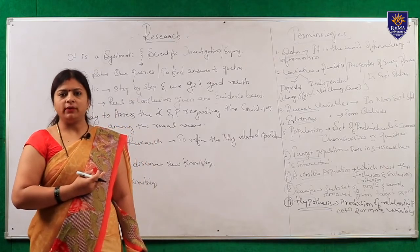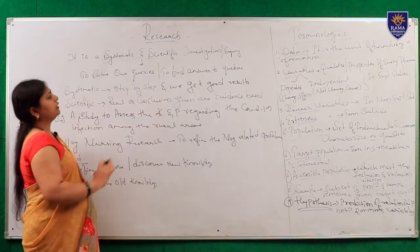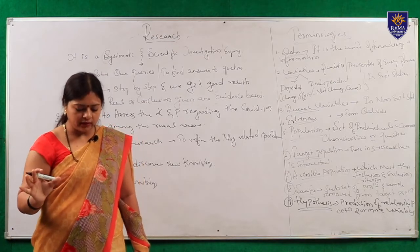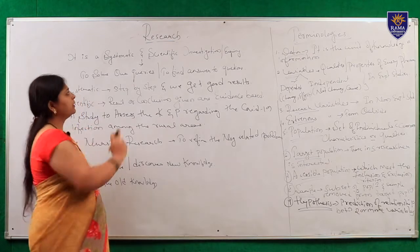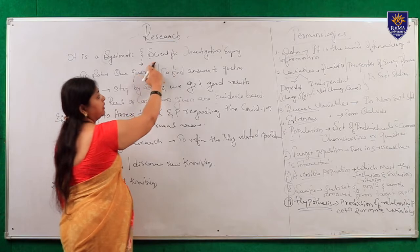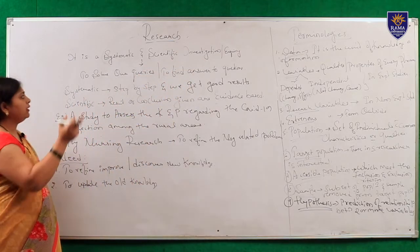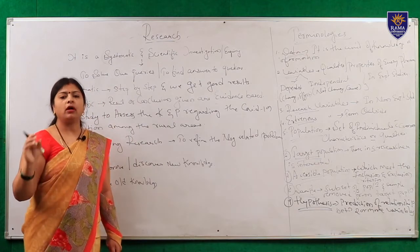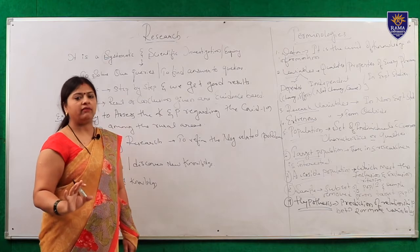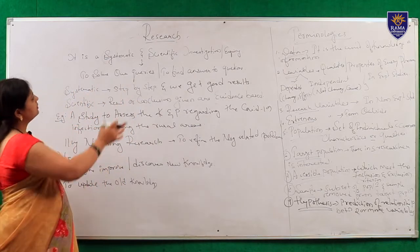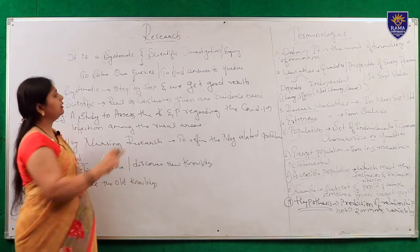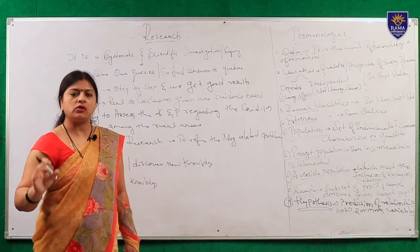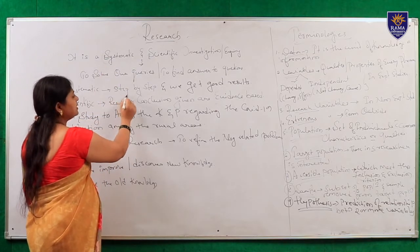Let us start with today's topic - research. What do you mean by research? Research is nothing but a systematic and scientific investigation or enquiry. We are doing it to solve our queries and to find out answers to our particular research-related questions. In this definition I use two words: systematic and scientific. Why do we call research a systematic process? Because systematic means it is a step-by-step process.